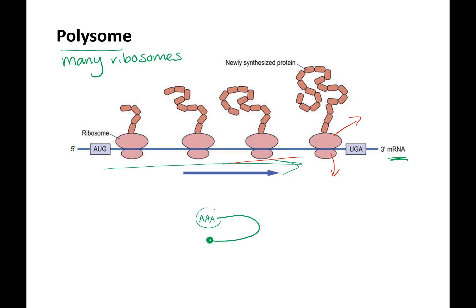You've got the poly-A binding protein and the initiation factors at the cap. Even though this poly-A tail is protected, it also can be degraded. When the poly-A tail gets too small, it can't help stabilize the whole initiation factor complex and translation stops.